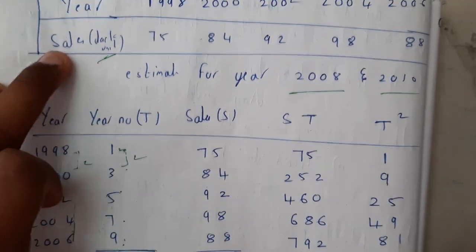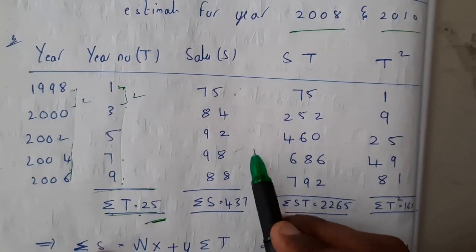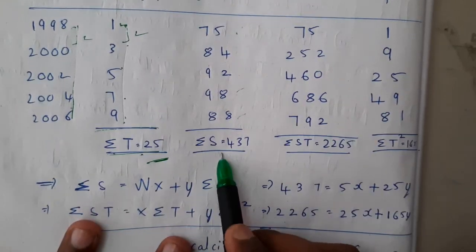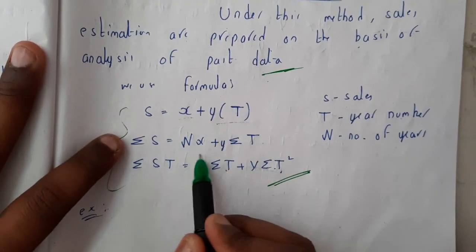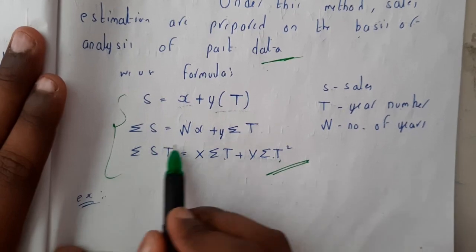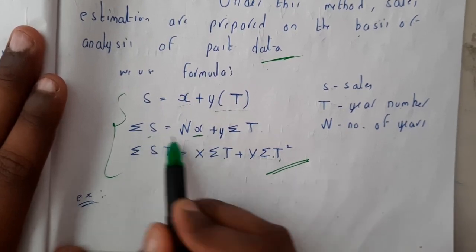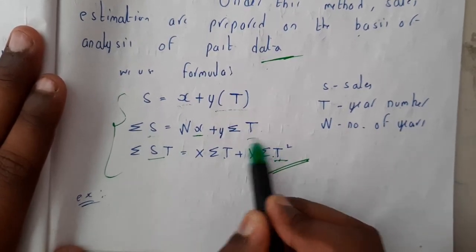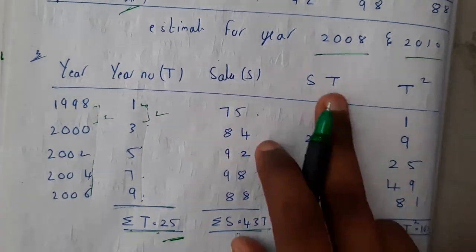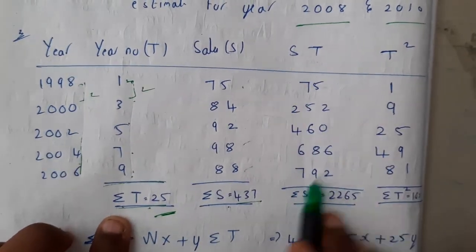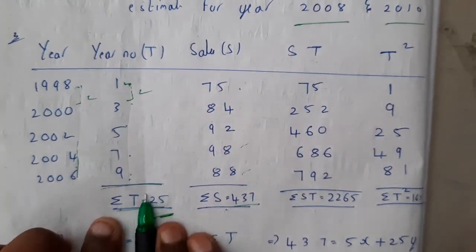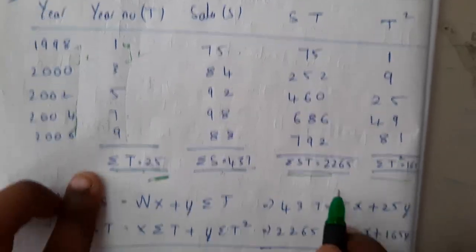Sales values given in the question are 75, 84, 92, 98, and 88, giving Σ S = 437. From the formulas we need x, y, S, ST, T, and T². We calculate ST by multiplying the year number and sales columns, and T² by squaring the year number, then apply sigma to each.